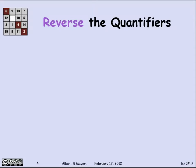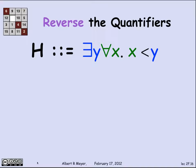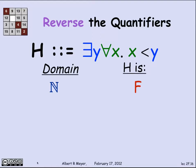Let's reverse the quantifiers and consider h: there exists a y such that for every x, x is less than y — meaning there's a biggest element. Over the non-negative integers, h is false because there's no biggest non-negative integer. Over the negative integers and negative reals, h is also false. In fact, h is false in any sensible domain where less-than behaves as expected, because any y would have to be bigger than itself.